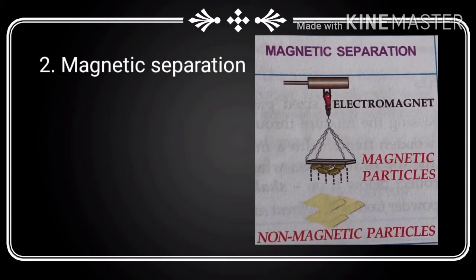The next method is magnetic separation. This method is based on the principle of magnetic and non-magnetic nature of particles. The magnetic particles such as iron are separated from non-magnetic particles like sulfur and carbon by utilizing the magnetic property of iron. The iron gets attracted to the magnet and separates from the non-magnetic substance. For example, separation of iron and sulfur.